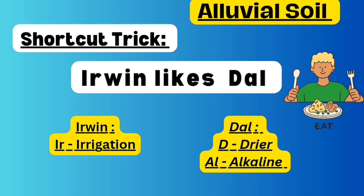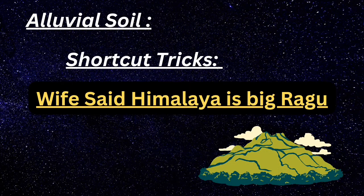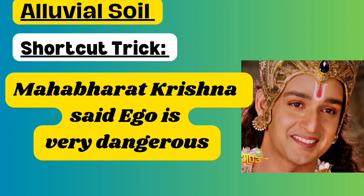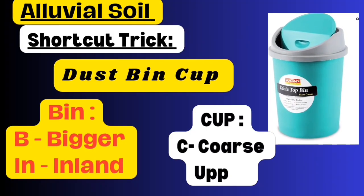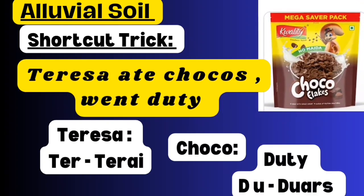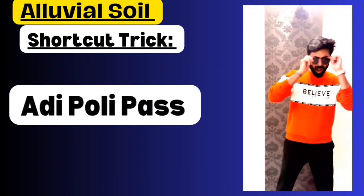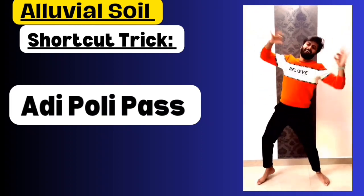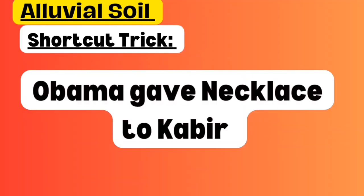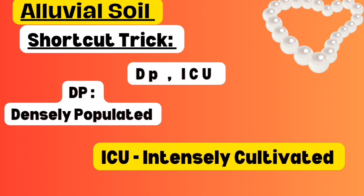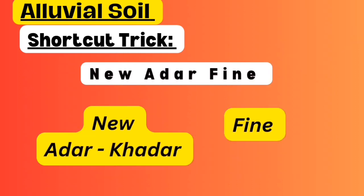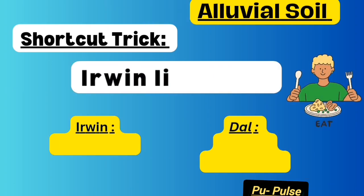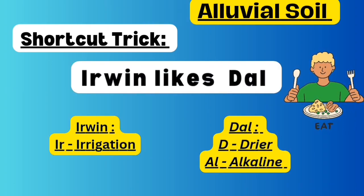Let's recall all the shortcuts: Wife Said Himalaya Is Big Rahu. Mahabharata Krishna Said Ego Is Very Dangerous. Dustbin Cup. Teresa Ate Chocos And Went Duty. Adipoli Pass. Obama Gave Necklace To Kabir. DP ICU. New Aadhaar, pay fine. Small Cute Pappu Likes Wheat. Irvin Likes Dal.